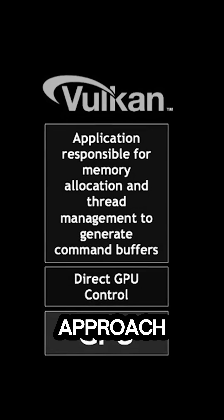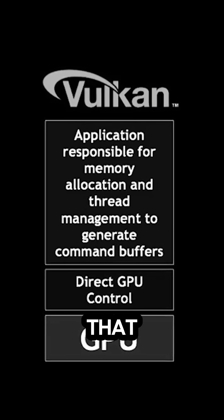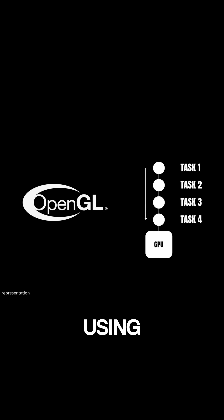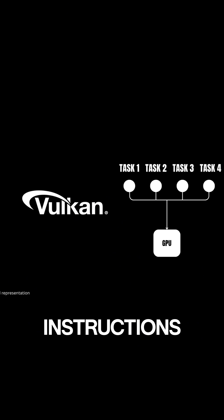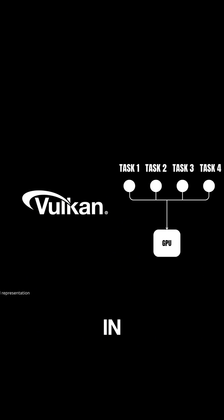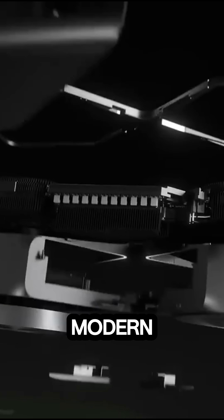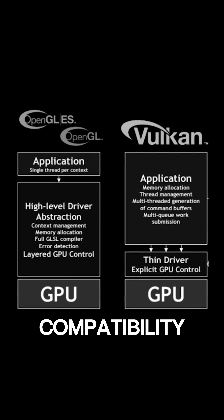Vulkan takes a different approach. It is a lower-level API that gives developers more control. So instead of Blender sending one command at a time, Vulkan allows batches of GPU instructions to be recorded and prepared in parallel. This means better use of modern GPUs and CPUs, and less guesswork when it comes to driver compatibility.